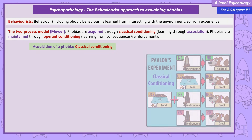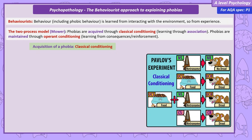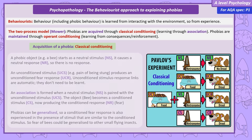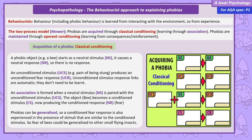Acquisition: we gain or acquire phobias through classical conditioning — learning by association. A phobic object, like a bee, starts as a neutral stimulus; it causes a neutral response, so no response. However, an unconditioned stimulus, like the pain of being stung, will produce an unconditioned fear response. These unconditioned stimulus-response links are automatic — they don't need to be learnt.